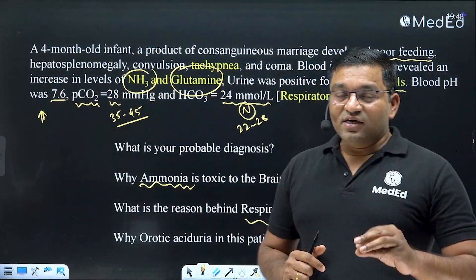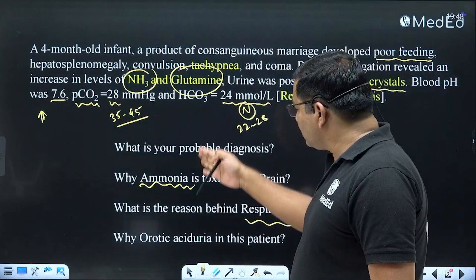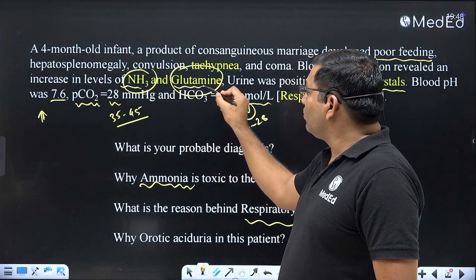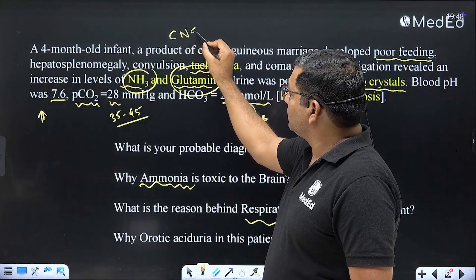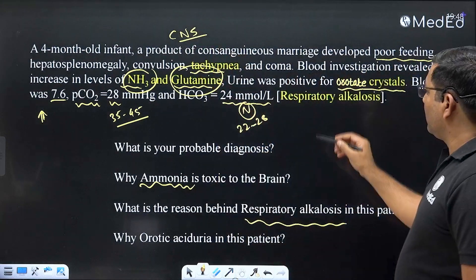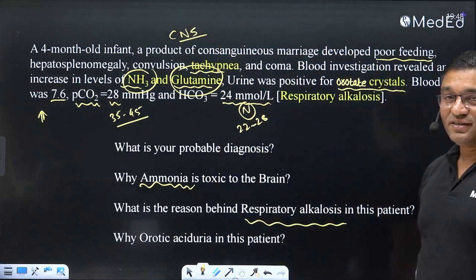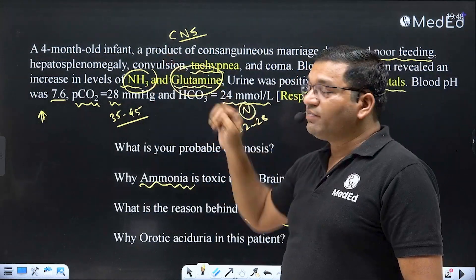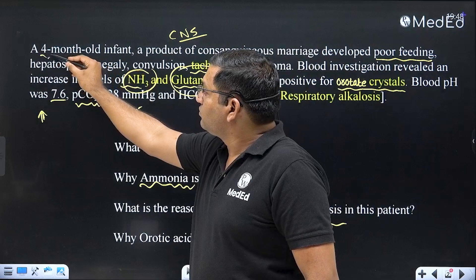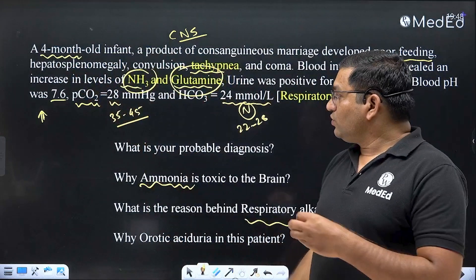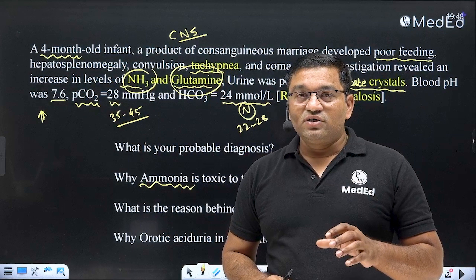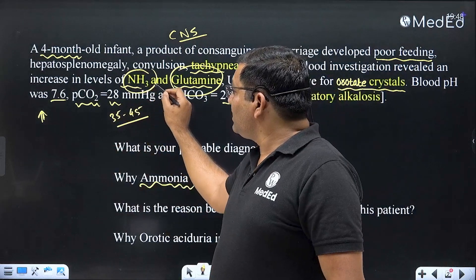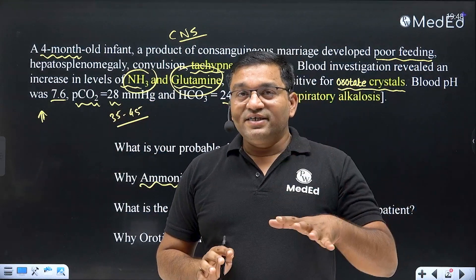We will discuss the urea cycle, important disorders related to it, and answer these questions. The hints here are: increased ammonia level, increased glutamine level, tachypnea, CNS manifestations, and urine positive for orotate crystals. Respiratory alkalosis and orotate crystal excretion in urine are given. The child is 4 months old. This case is related to a urea cycle disorder because, as per first MBBS syllabus, whenever there is an increase in ammonia level, it indicates urea cycle disease.